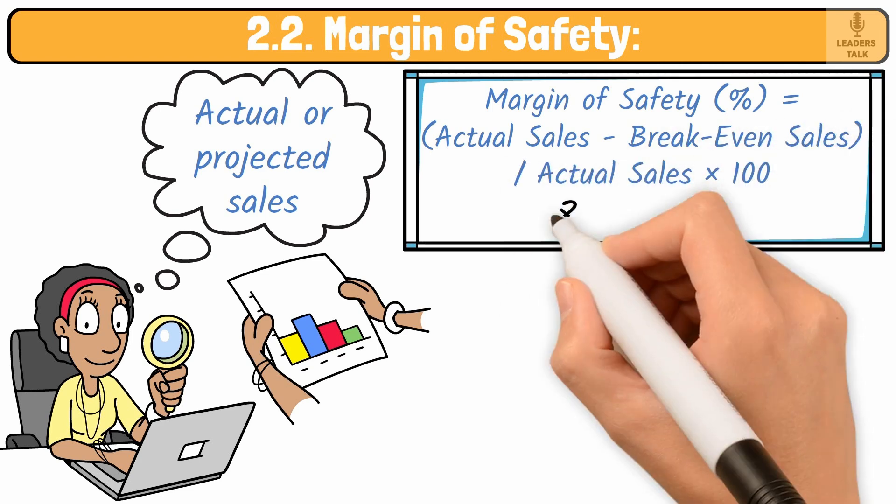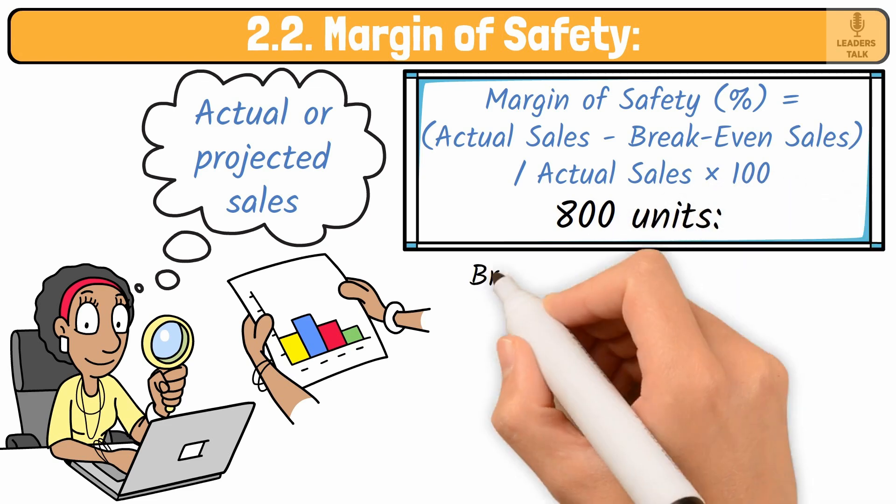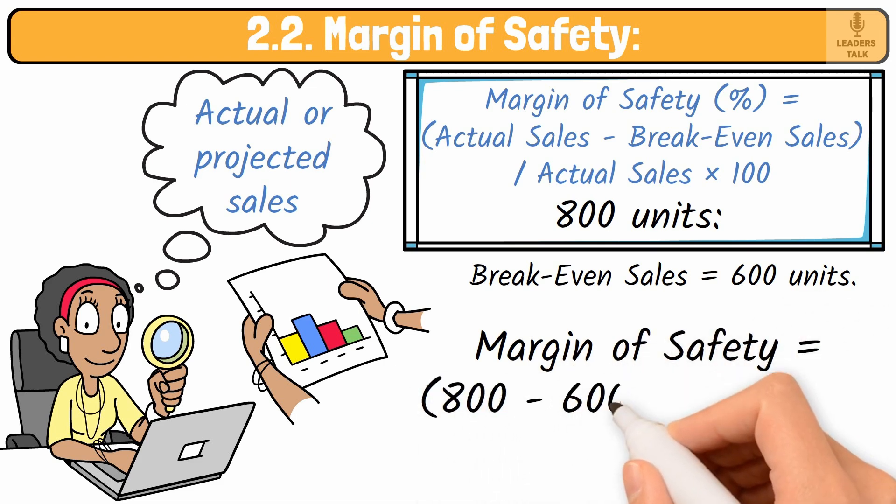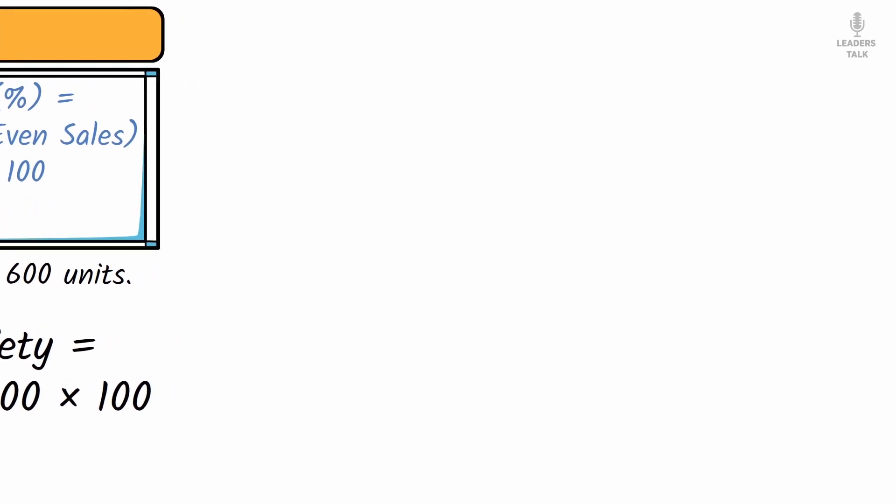For example, if your actual sales are 800 units and breakeven sales equals 600 units, margin of safety equal 800 minus 600 divided by 800 into 100 equal 25%. This means you have a safety cushion of 25% allowing for flexibility in sales.